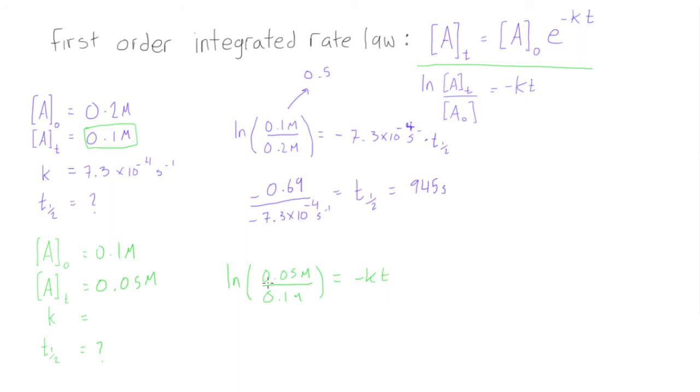So, anyways, 0.05 divided by 0.1, actually check this out, it is also 0.5. So, all we're doing here is, this is going to be looking exactly the same now, so we have the ln of 0.5, again, is going to be equal to negative 0.69.